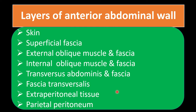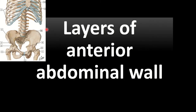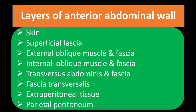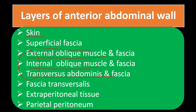These layers are very important for the abdomen. They provide support and are the main source of strength of the abdomen. To recap: first is skin, then superficial fascia, then the three important muscles — external oblique muscle and fascia, internal oblique muscle and fascia, and transversus abdominis muscle and fascia.